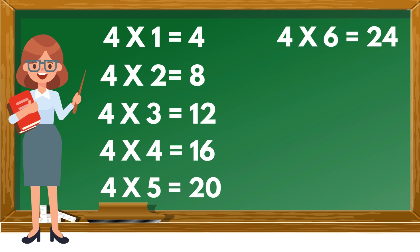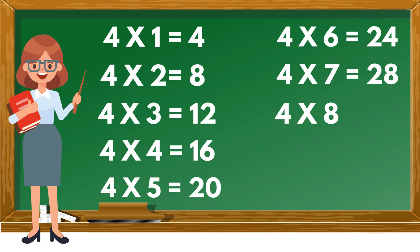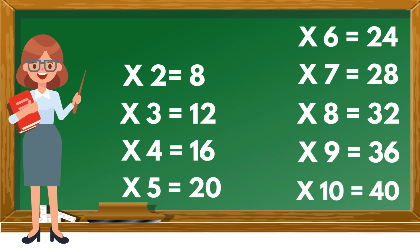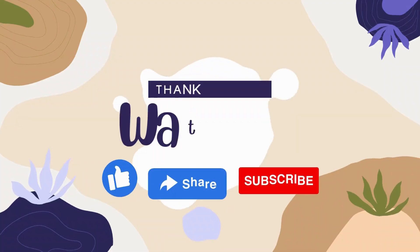Four sixes are twenty-four. Four sevens are twenty-eight. Four eights are thirty-two. Four nines are thirty-six. Four tens are forty.